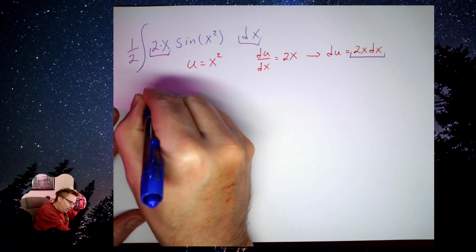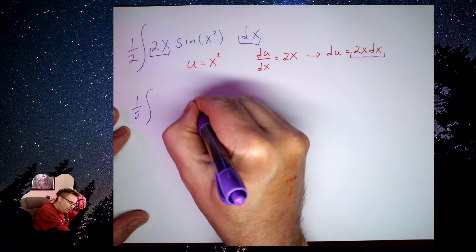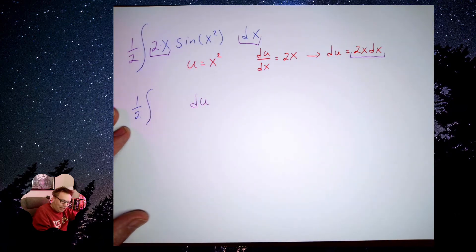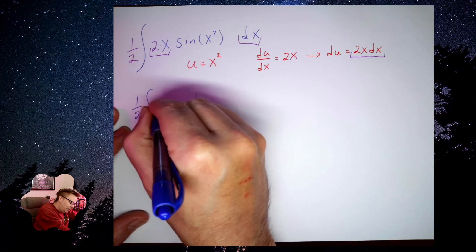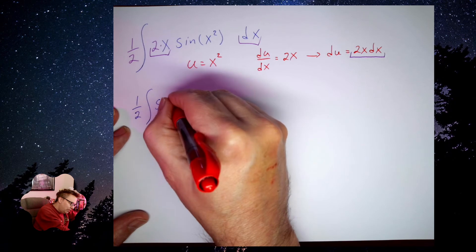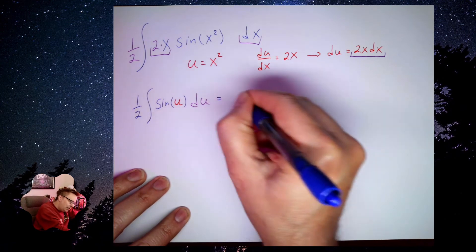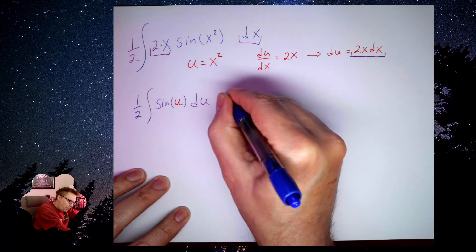One half on the outside. The 2x dx, well, that's going to be my du. And then I have sine of the x squared, which is just u. So this anti-derivative, again, shouldn't be too bad.